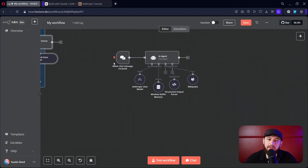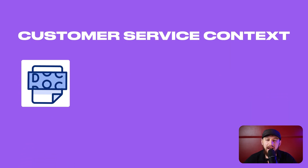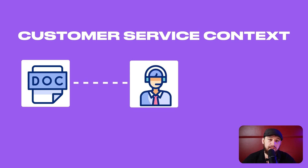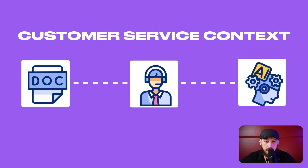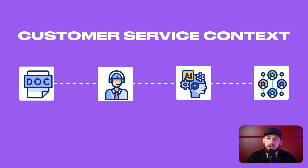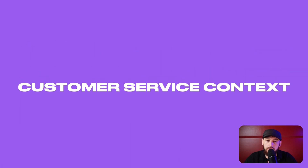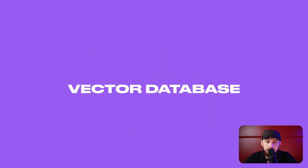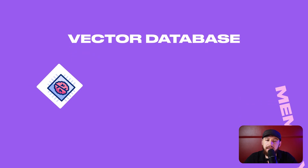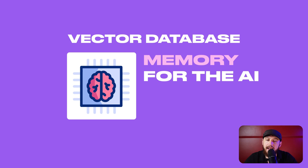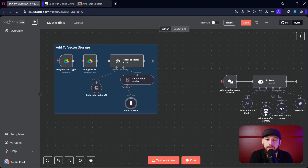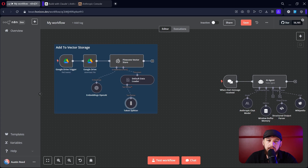Now let's get into the advanced portion of the tutorial. In order to have a more advanced AI agent, the first thing we need to do is give it a base memory of documents that it can search through. You can imagine this in a customer service context — you have a bunch of FAQ documents and training documents, and you want to give all those to an AI so it can generate answers for the people that interact with it. In order to do that, we need to start a vector database. The vector database is basically a memory for the AI that the AI can then access — it's not a memory of the chat, it's the AI's knowledge, it's the AI's brain.